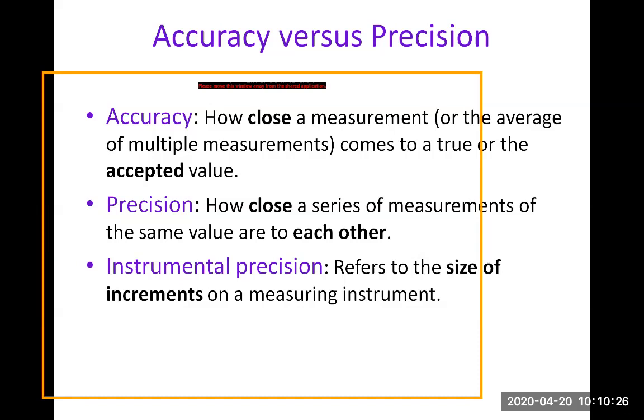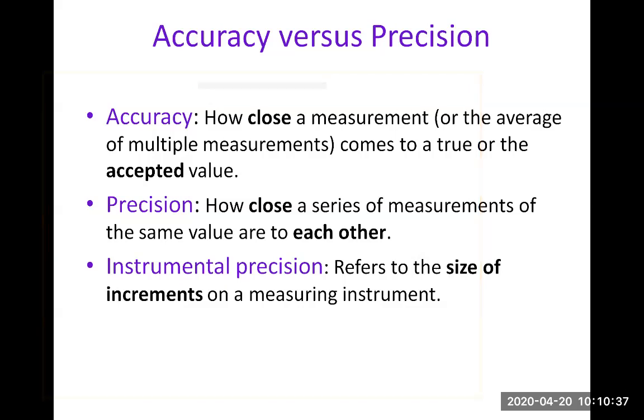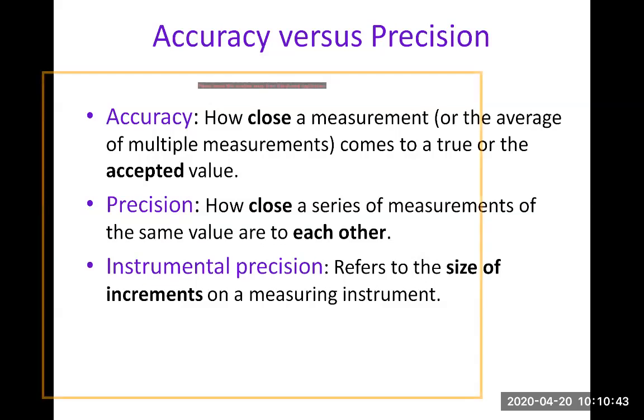Precision is how close a series of measurements of the same value are to each other. So if you repeat a measurement of the same thing and you always come very close to the same value, then that means you're precise, you're able to repeat your measurement with precision.